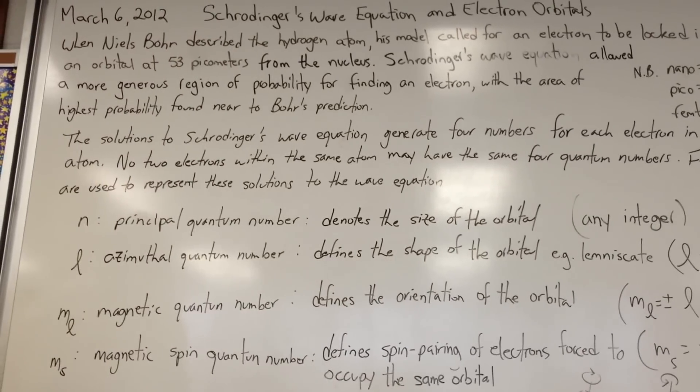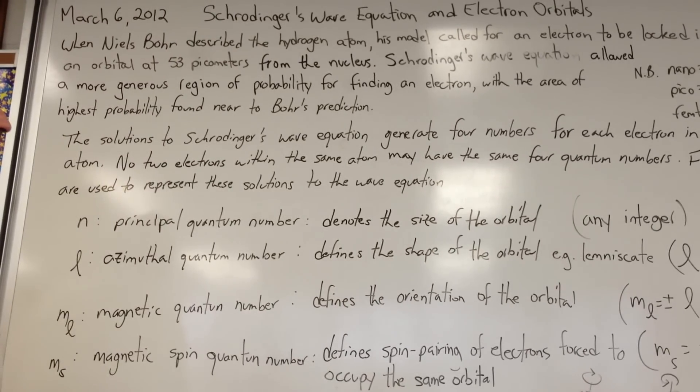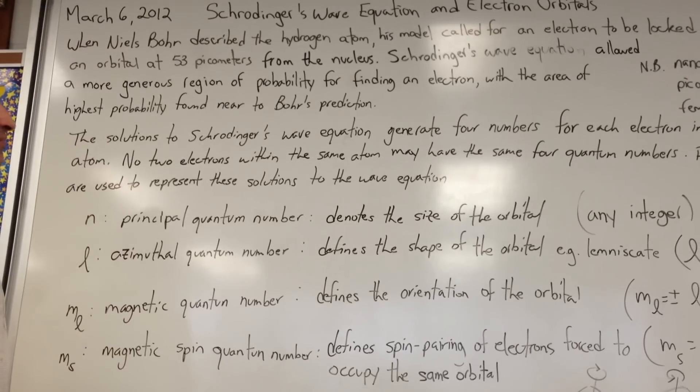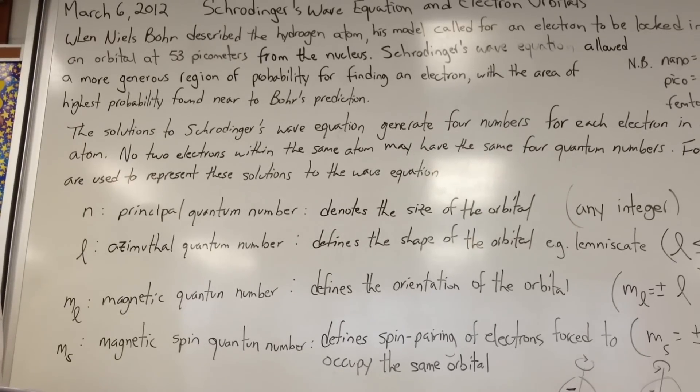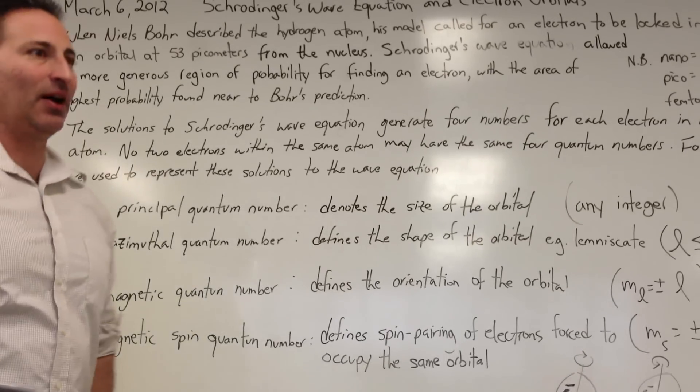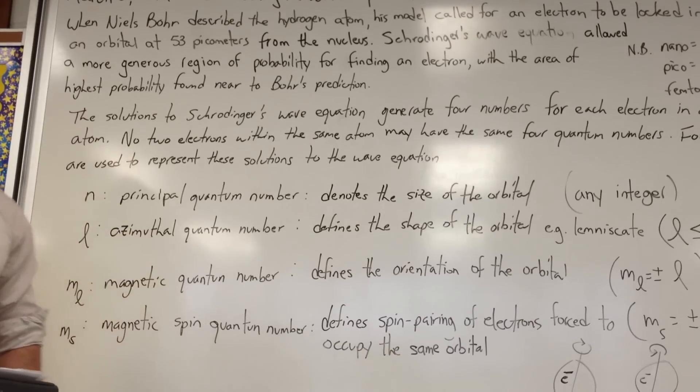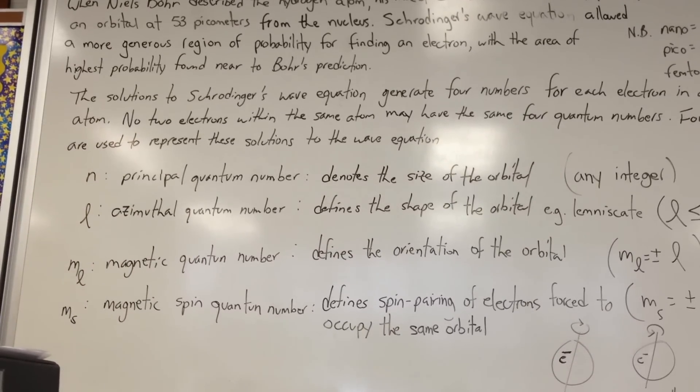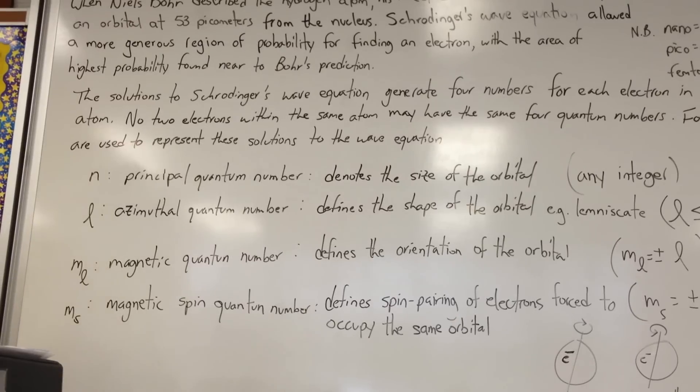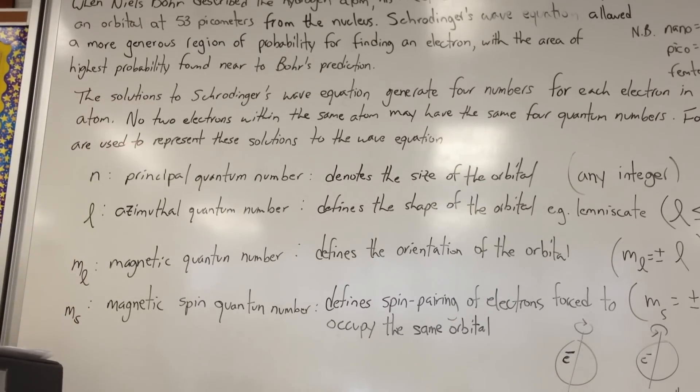Schrödinger's wave equation allowed a more generous region of probability for finding an electron, with the area of highest probability found near Bohr's prediction. Schrödinger's wave equation made allowances for the fact that the electron is moving around very rapidly, and it made allowances for regions of probability rather than a rigid planetary-like orbit around the nucleus.